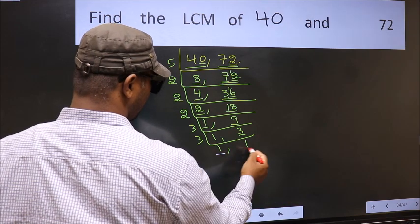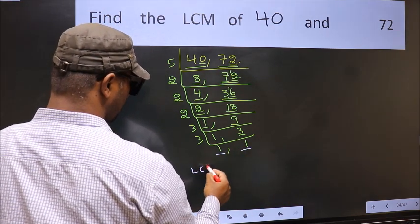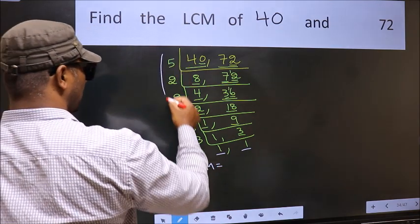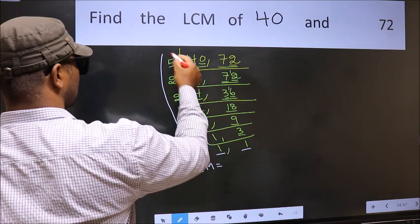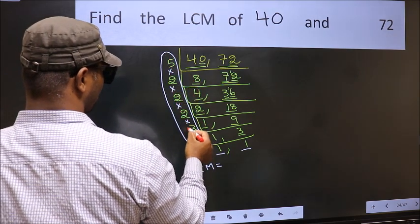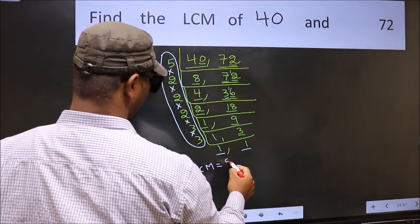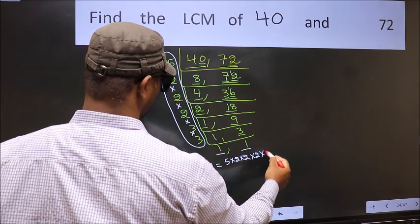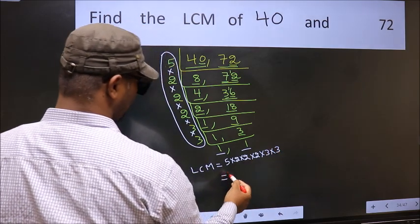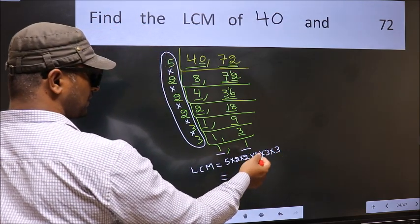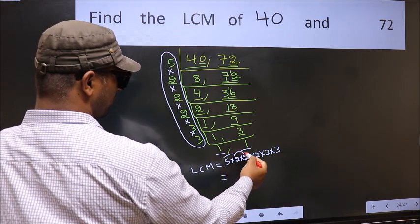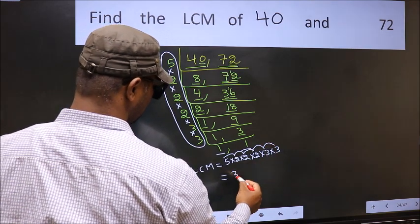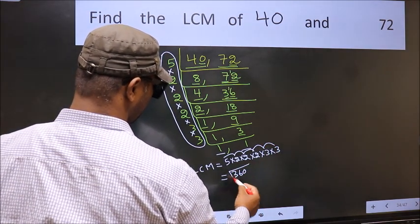We got 1 in both places. So the LCM is the product of these numbers: 5 times 2 times 2 times 2 times 2 times 3 times 3. Let us multiply these: 5 times 2 is 10, times 2 is 20, times 2 is 40, times 3 is 120, times 3 is 360. So 360 is our LCM.